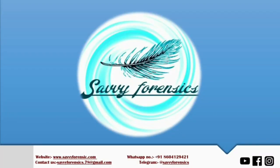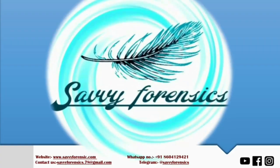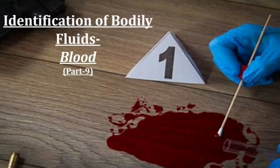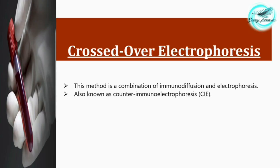Welcome back to Savvy Forensics. In this video, we'll be learning about the ninth part of the identification of bodily fluids, focusing on blood. We'll be discussing crossed-over electrophoresis, which is the last method of biological identification of blood.